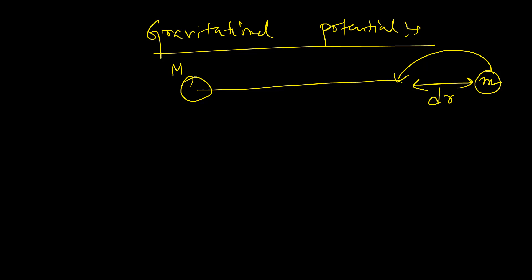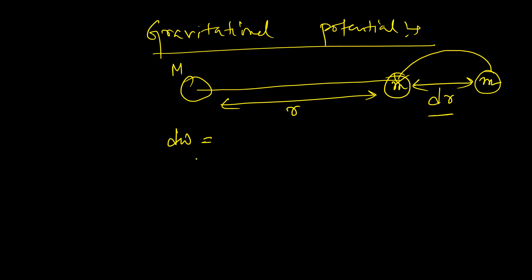When the object is placed in the gravitational field at a point, the separation distance between the two objects is r. When the object is placed in the gravitational field it will experience some force. The same force I applied to bring the object into the gravitational field — the same force will be experienced by that object. The distance moved from infinity into the gravitational field is dr, which is an infinitely small distance. The work done dW equals the force applied multiplied by the distance traveled.